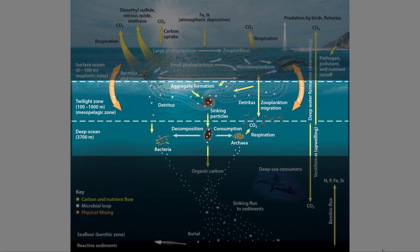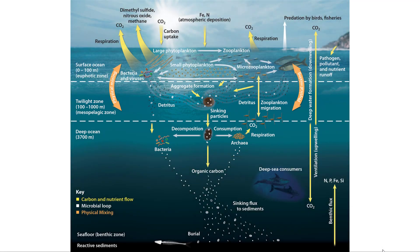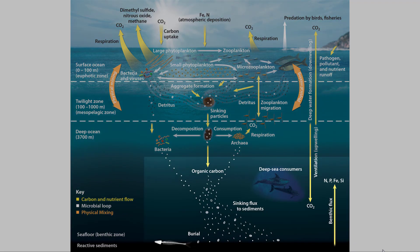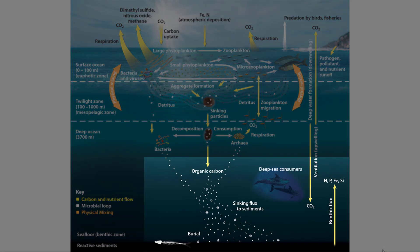When things die, they go down to that twilight zone. At that point, things get broken down more through decomposition. There are other organisms living down there that do cellular respiration. And at the very bottom, some of these organic carbon compounds will float down and become part of the ocean floor.